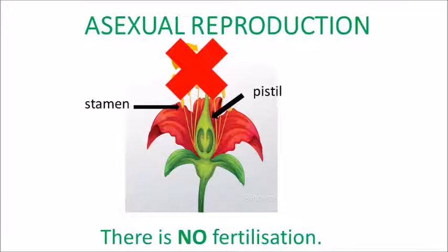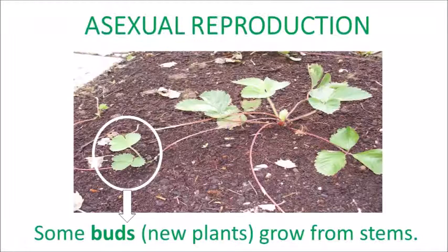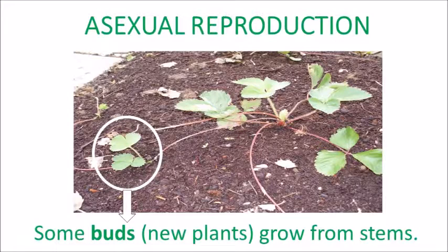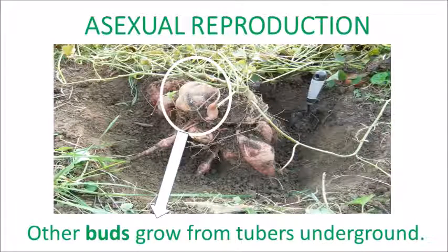Asexual reproduction. In asexual reproduction there is no fertilisation. Some buds or new plants grow from the stems, and other buds grow from tubers under the ground.